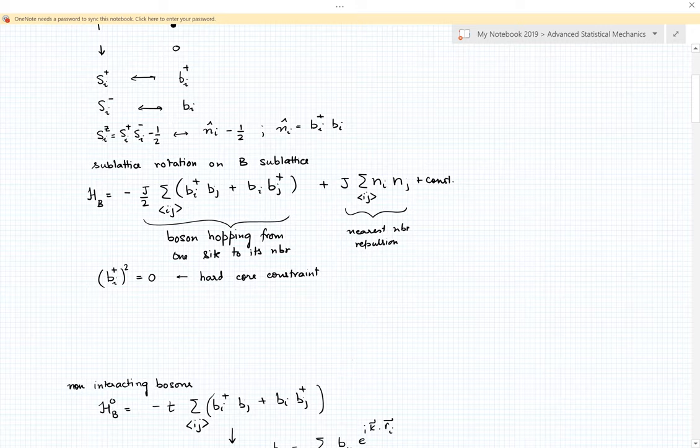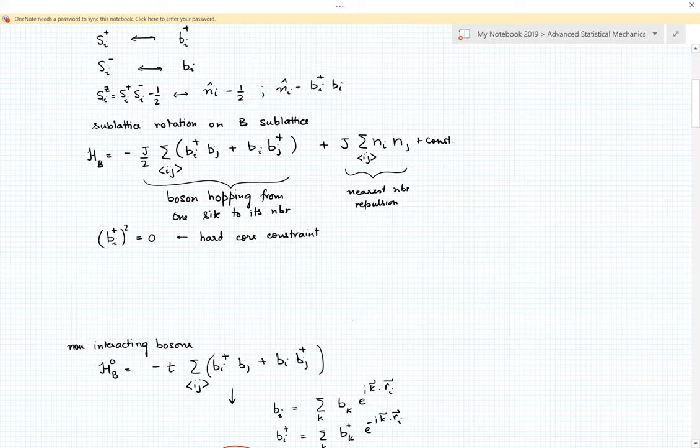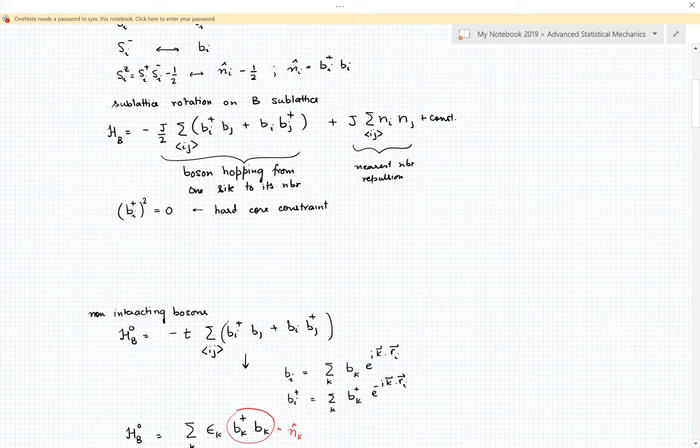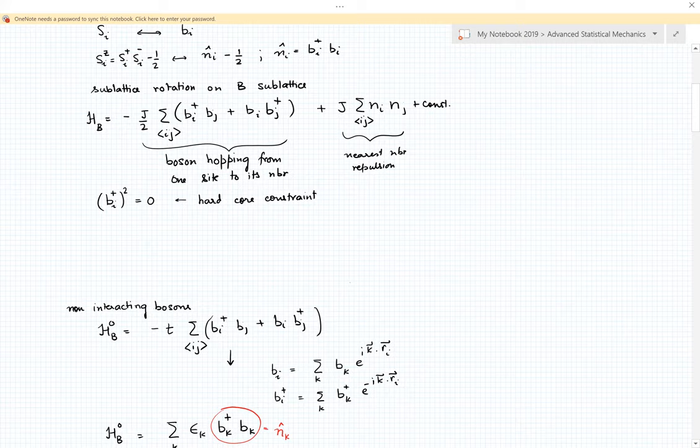Now what is deceptive here: the hopping term looks like it is quadratic, but actually it's a very strongly interacting term because there is a constraint coming from the hardcore interaction between the bosons. That shows up because b_i^†^2 equals zero. This is coming from the spin half problem - you can take a down spin and make it up but you can't raise that spin any further. This is a very strongly interacting problem even if the nearest neighbor interactions were zero. To see how they would show up, let me turn to a different problem.